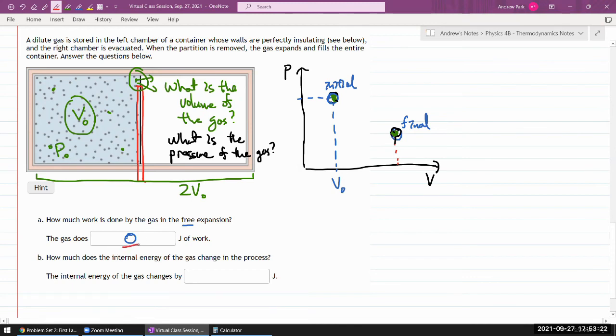Now if no work is being done, and the question was careful about saying how it's perfectly insulating, then it's an easy application of the first law of thermodynamics, which says the change in internal energy is the net heat transfer minus the work being done by the gas. So there's no heat transfer and there's no work being done, and you can easily say that the internal energy of the gas does not change in the process.